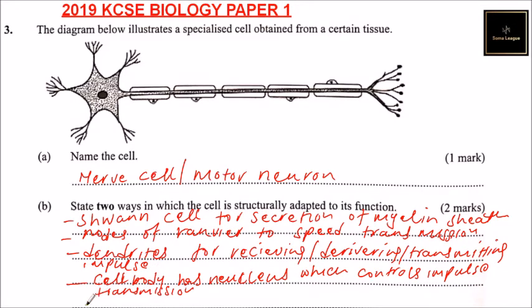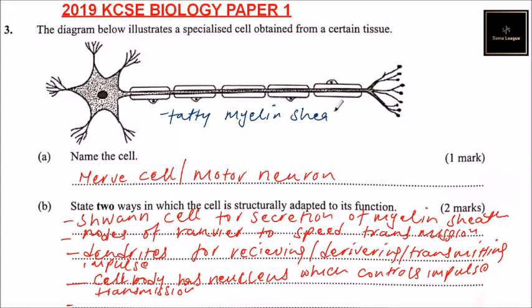Another adaptation is the myelin sheath for faster transmission — faster transmission of impulses.